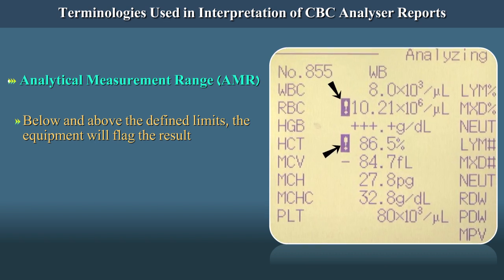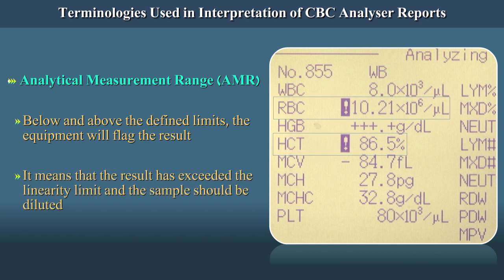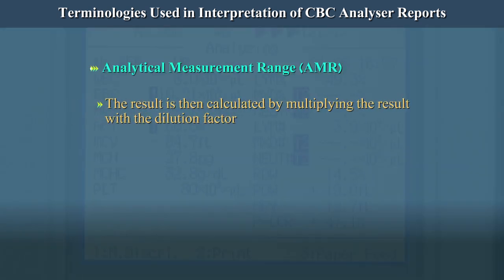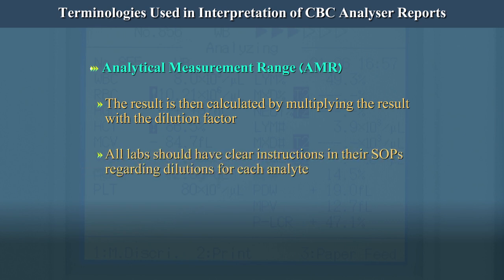In this case, an exclamation mark flag means that the result has exceeded the linearity limit and the sample should be diluted for upper ranges exceeding the AMR. The result is then calculated by multiplying the result with the dilution factor. All labs should have clear instructions in their SOPs regarding dilutions for each analyte.